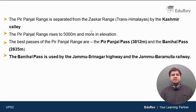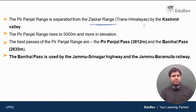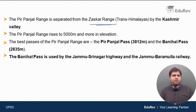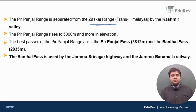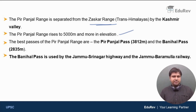The Pir Panjal range is separated from the Zaskar range — which belongs to the Trans Himalayas — by the Kashmir valley, which we will also discuss in this video. The Pir Panjal range rises to 5,000 meters and more in elevation, making it the highest mountain range within the middle Himalayas.